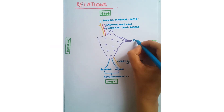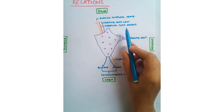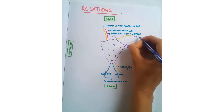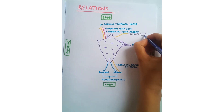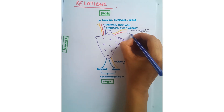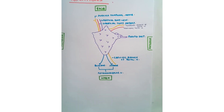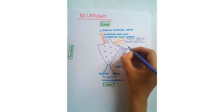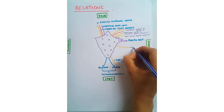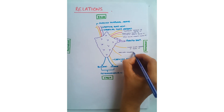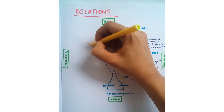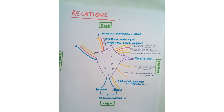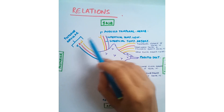In the anterior border, the parotid duct divides into two portions. Above the duct there are the temporal branch of facial nerve, transverse facial artery, zygomatic branch of facial nerve, and upper buccal branch of facial nerve. Below the parotid duct you have the lower buccal branch and marginal mandibular branch of facial nerve. In the posterior border there are posterior auricular nerve and vessels — one posterior auricular vein, posterior auricular artery, and posterior auricular nerve.